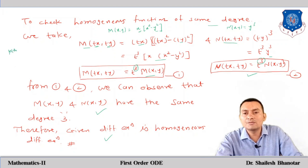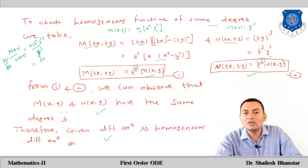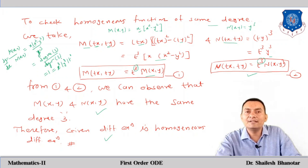Looking at dy/dx = M/N = x(x²−y²)/y³, the numerator has degree 3 (each term: x³ has degree 3, xy² has degree 3) and the denominator has degree 3. So M/N gives degree 0, confirming this is a homogeneous equation. Whenever M/N has degree 0, the differential equation is homogeneous.